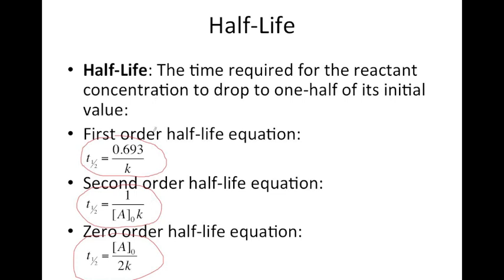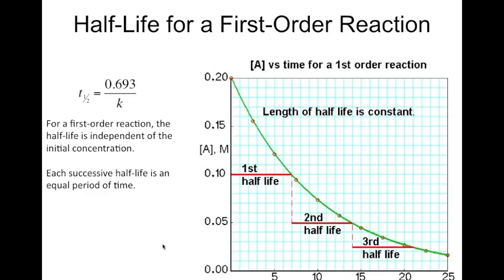Let's look at each of these half-life equations in a bit more detail. For a first-order reaction, the equation is T one-half equals 0.693 divided by the rate constant. Notice that in this equation there is no initial concentration, so for a first-order reaction the half-life is independent of the initial concentration. Therefore, each half-life is a constant value — a constant time.